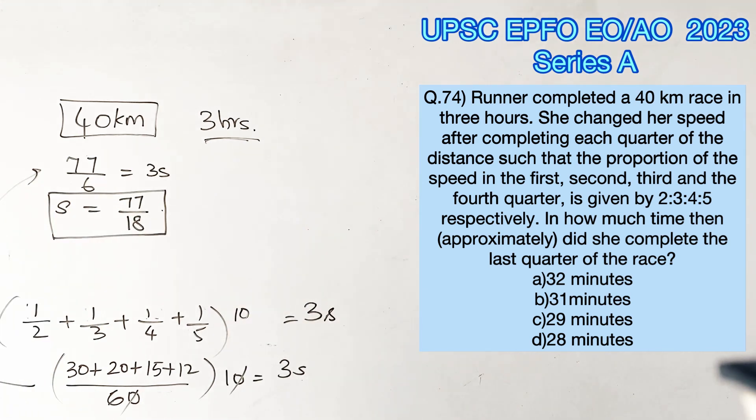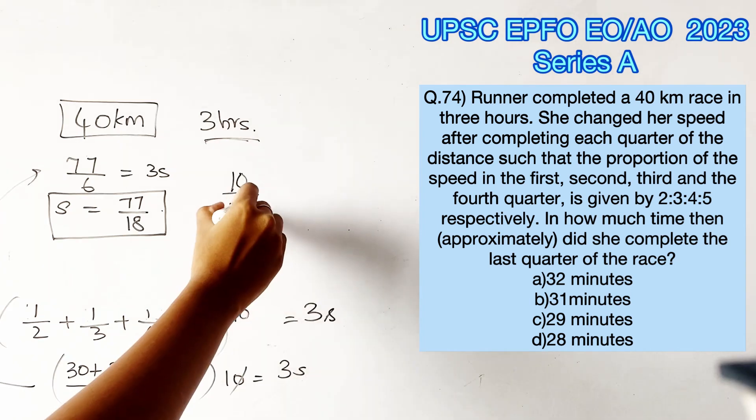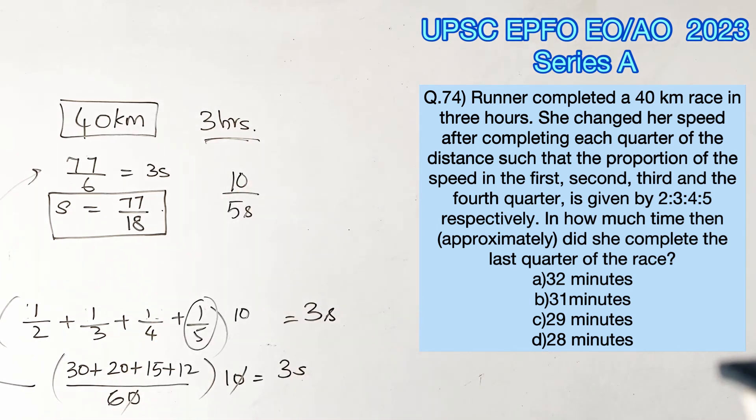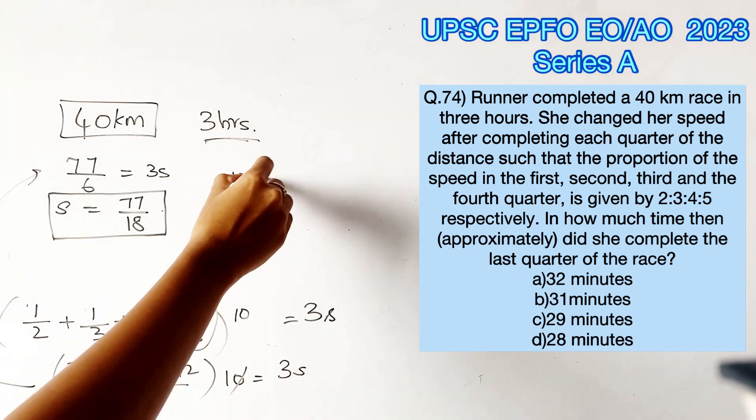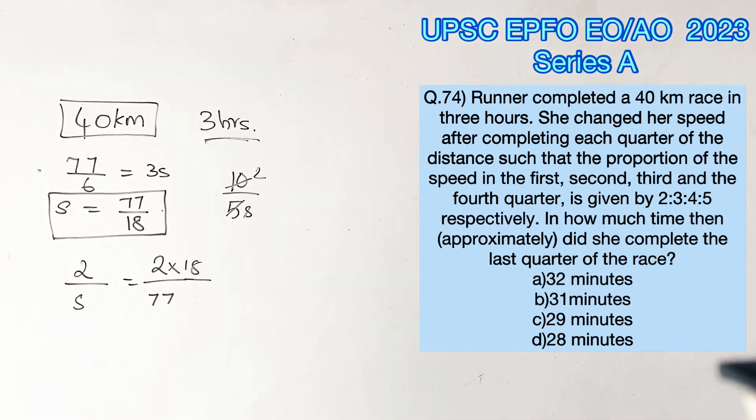Now we are supposed to find the amount of time that took her to complete the last quarter of the race. We know that the last quarter of the race was completed with the speed of 5s. So canceling 10 and 5, we get 2 by s. Substituting the value of s, 77 by 18 in the denominator.